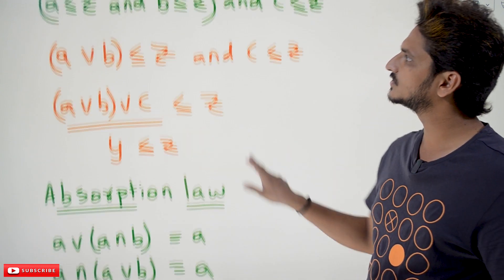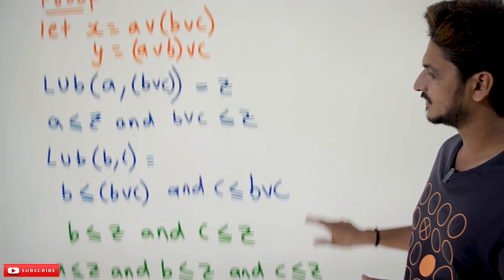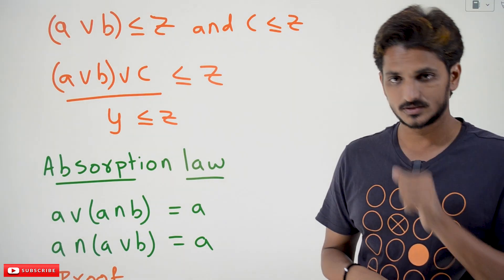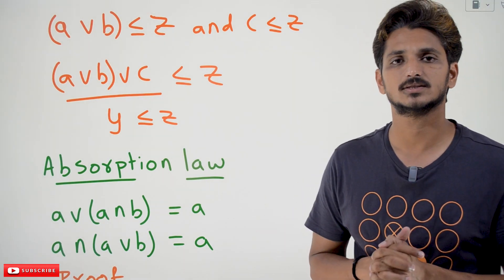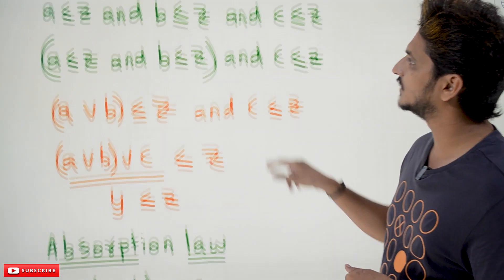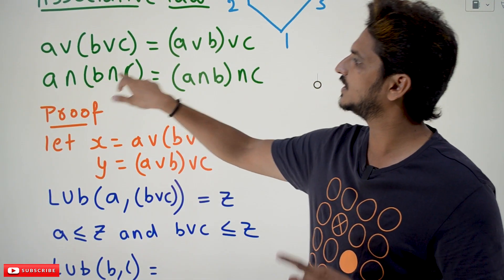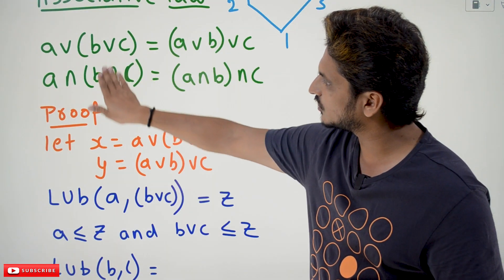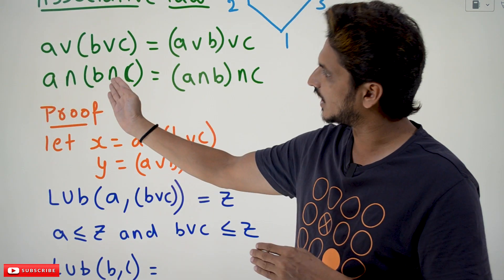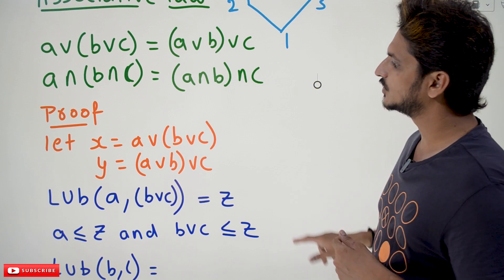This can be written as (A relates Z and B relates Z) and C relates Z, which gives A least upper bound B relates Z, and then A least upper bound B least upper bound C relates Z. What is this? This means Y. So both X and Y relate Z — Y relates Z. Similarly, you take the RHS and show it equals the LHS. This can also be applied for the greatest lower bound: A greatest lower bound (B greatest lower bound C) equals (A greatest lower bound B) greatest lower bound C. This is what the associative law states.